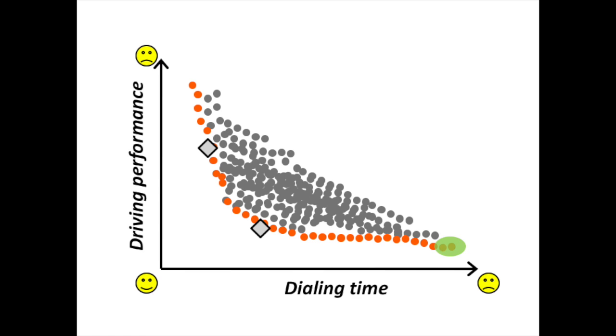Surprisingly though, steering performance was not the best possible. Rather, participants seemed to trade off the performance on the driving task with the performance on the dialing task to achieve reasonable performance on both tasks.